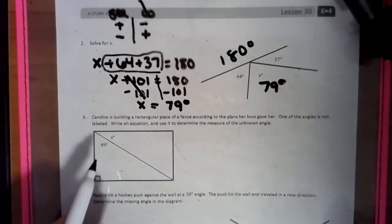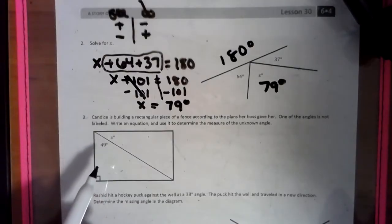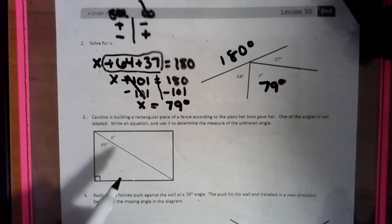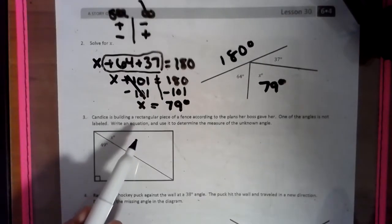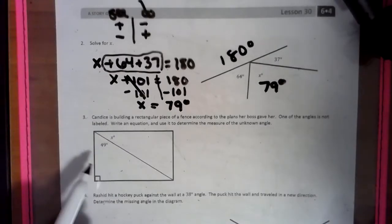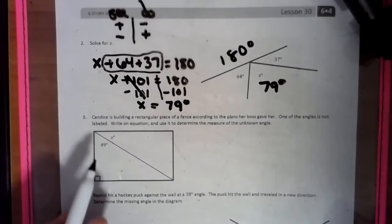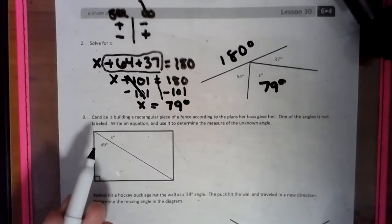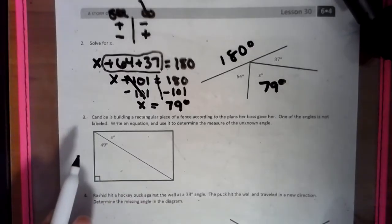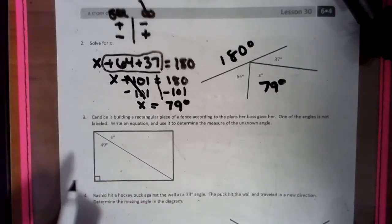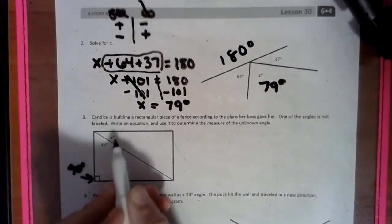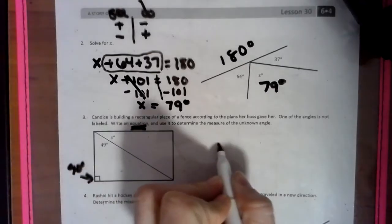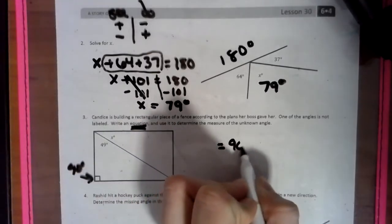Now here, we're looking at a rectangle. It says: Candace is building a rectangular piece of fence according to the plans her boss gave her. One of the angles is not labeled. An equation is used to determine the measure of the unknown angle. One thing we know about rectangles is that the corners are 90 degrees. A quadrilateral has 360 degrees, but the angles are all 90s. That's what that box stands for — 90 degrees. So we can make an equation, and that means we have an equal sign.